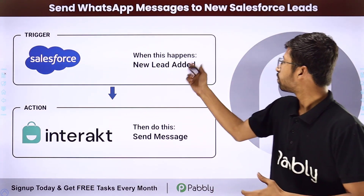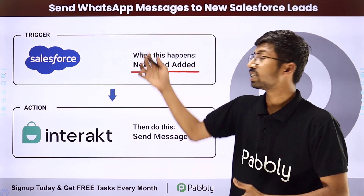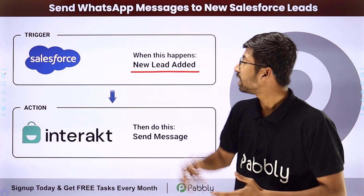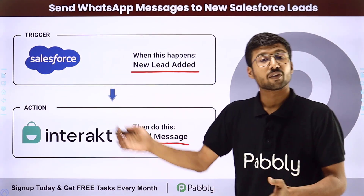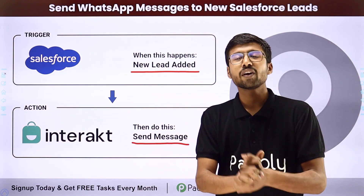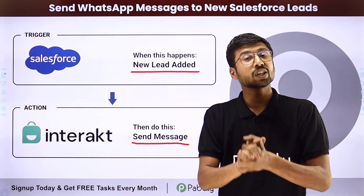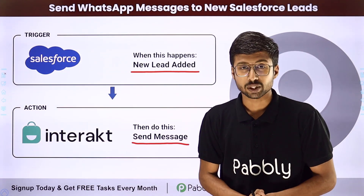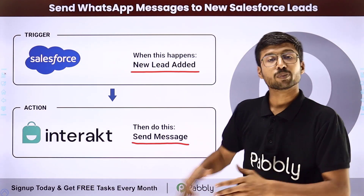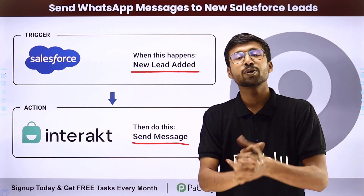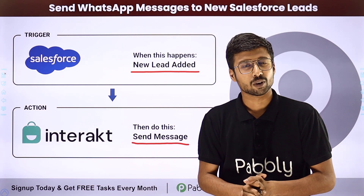The trigger of this automation will be adding or getting a new lead in Salesforce CRM, and the action will be sending a WhatsApp message to that same lead using Interact. Interact is one of the official business APIs of WhatsApp. To set up this automation, we are going to use Pavlik Connect, which is an automation and integration platform.